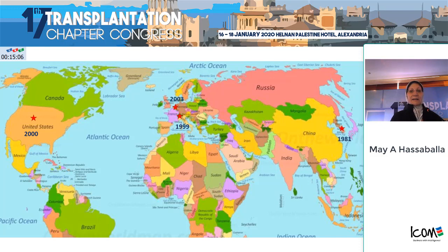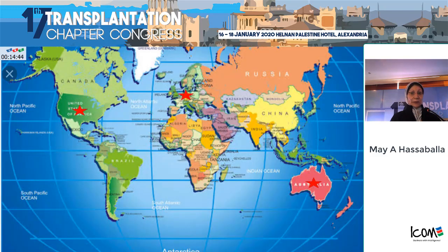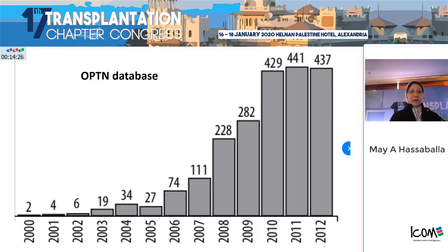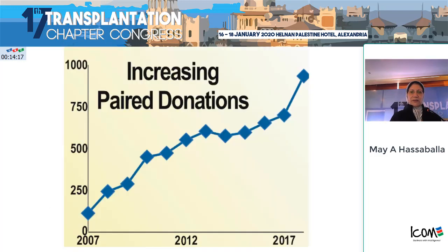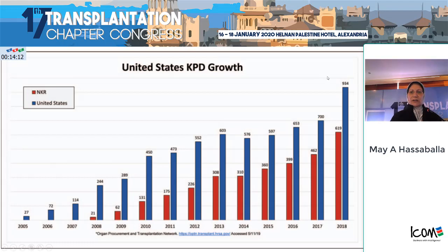The United States started in 2000, the Netherlands in 2003, and Canada in 2005. The UNOS network of organ sharing started multi-center kidney-paired programs throughout the U.S., and then it spread to the rest of the world. In the U.S. there are federally organized registries, as well as others like the National Kidney Registry, one of the biggest registries worldwide. The number of participating organizations has been increasing from year 2000 to 2012 and is still increasing, approaching nearly 2,000. The National Kidney Registry contributes a significant number of kidney and paired kidney donations, and the wider the network gets, the more chances there are to optimize sharing and accommodate hard-to-match recipients.